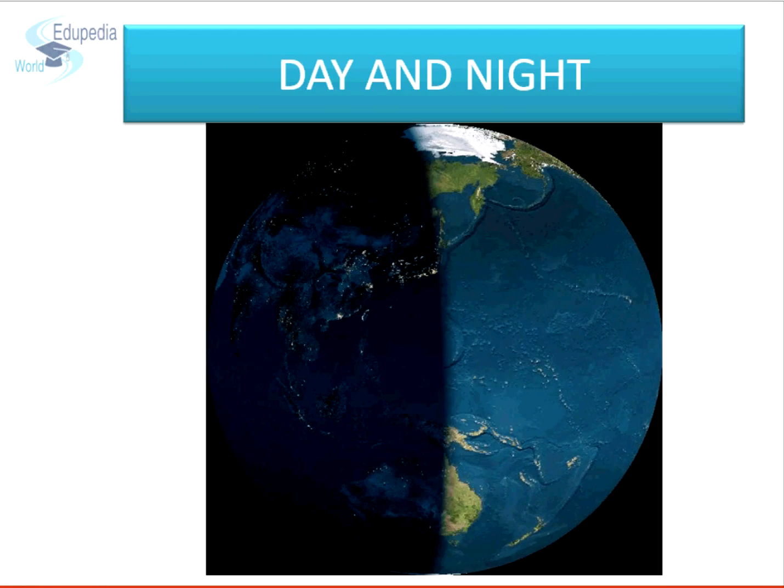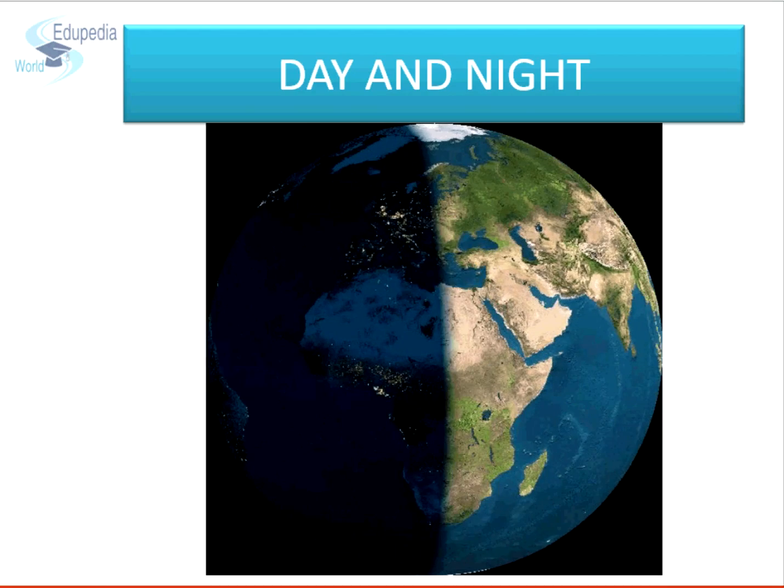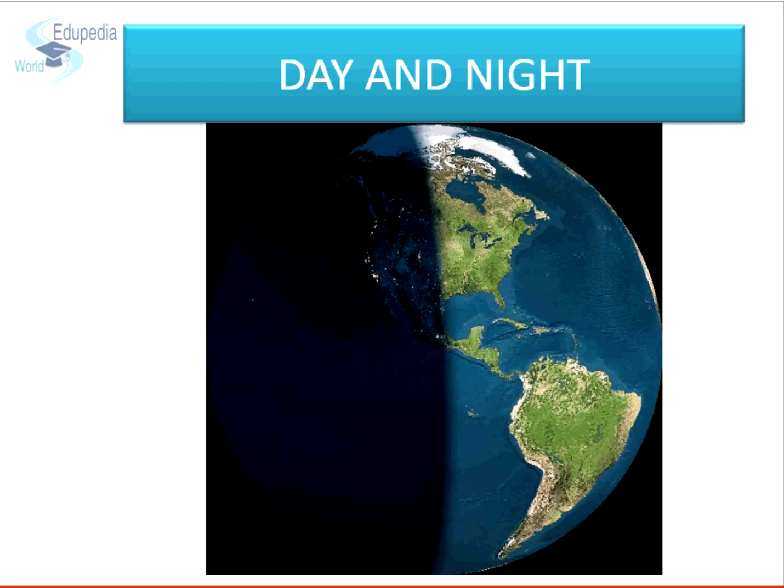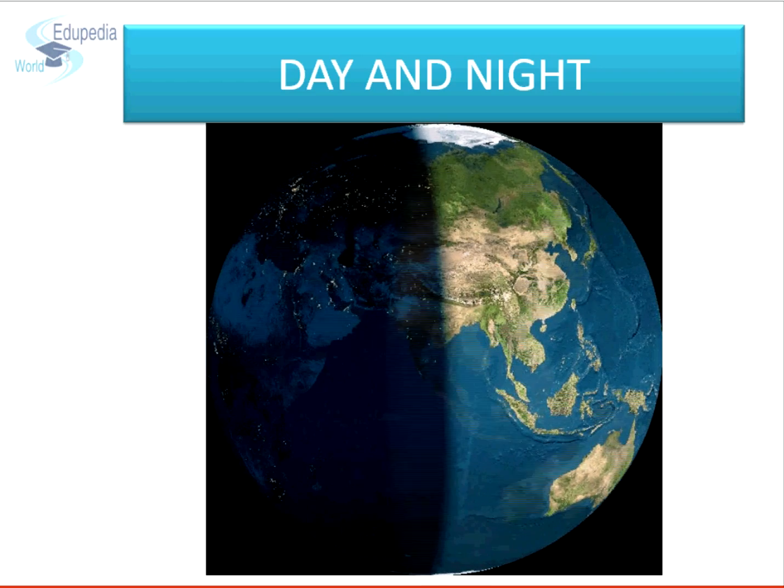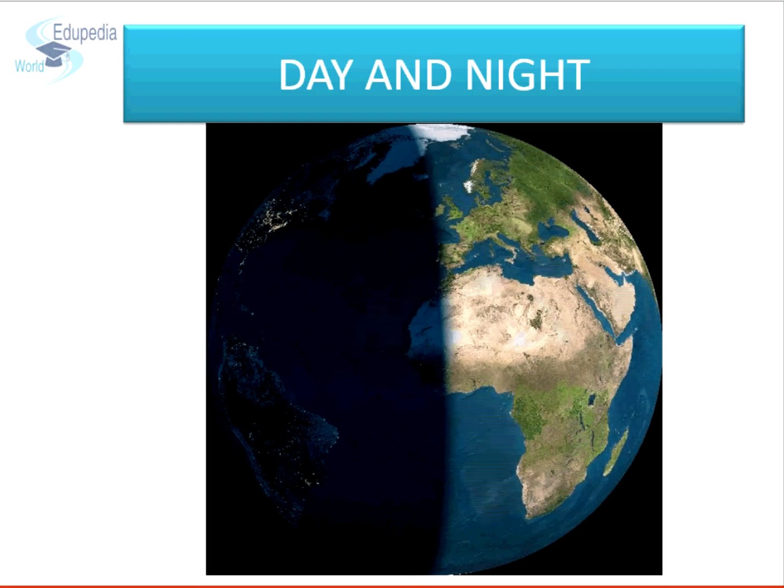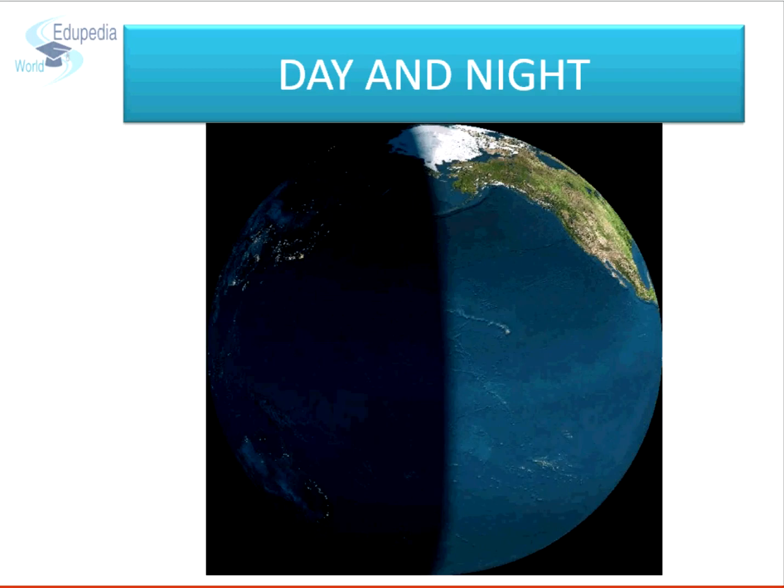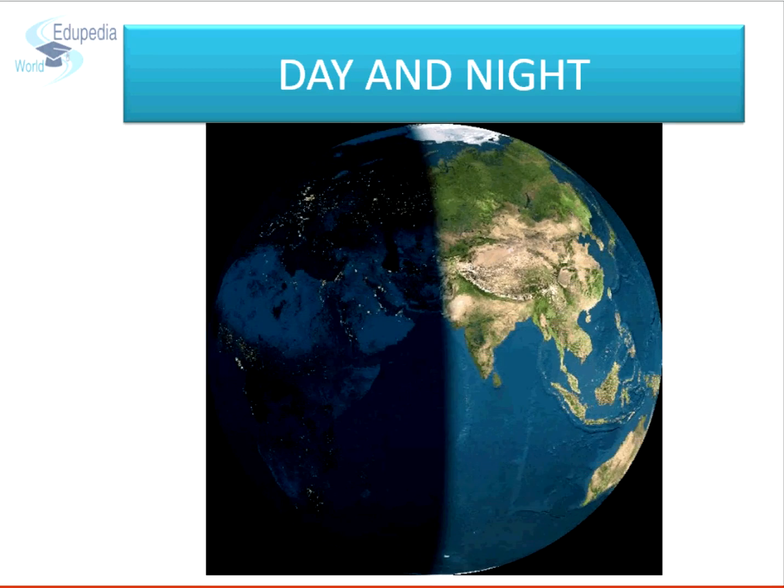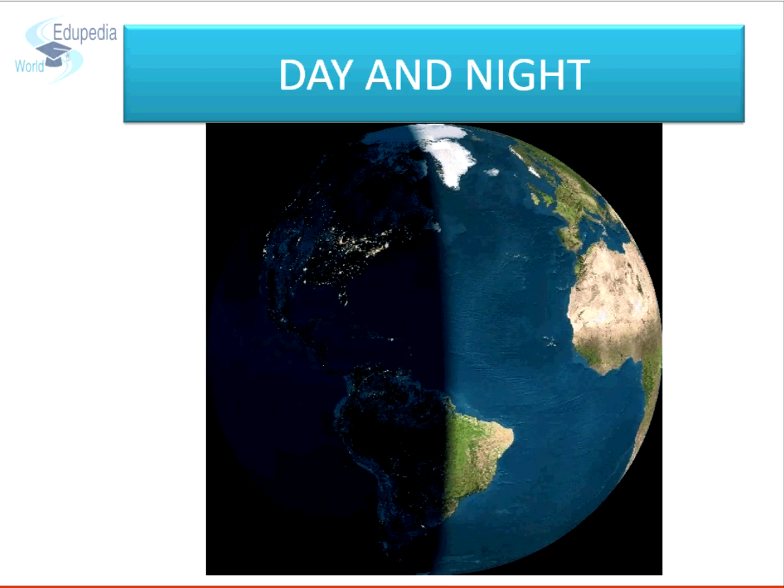Occurrence of day and night. As the Earth rotates, every part of it experiences day when it is facing the sun and night when it is on the other side. At any point in time, only half of the Earth receives sunlight while the other half is in darkness.